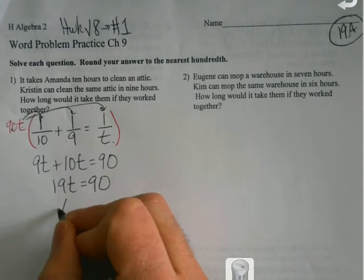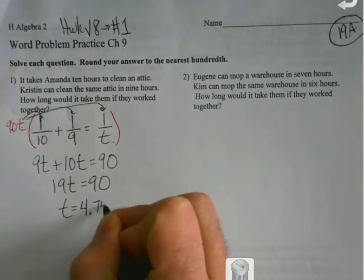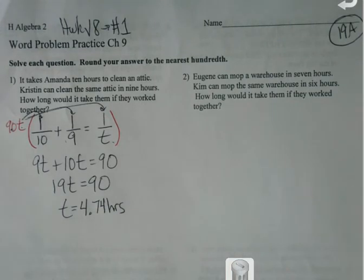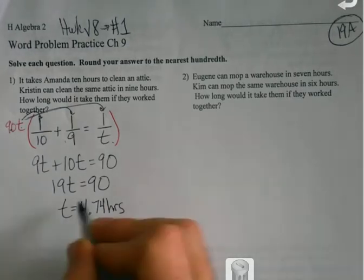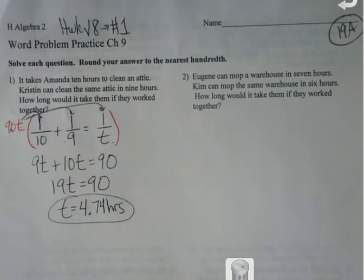But one thing I am going to watch out for is if something makes sense. In other words, if it takes individuals 10 hours and 9 hours to do a job respectively, the answer I get for them being together better be less. Because if it's not, something went wrong somewhere. So that's basically all we're going to be doing down here. So for all these first four, that's going to be your setup.